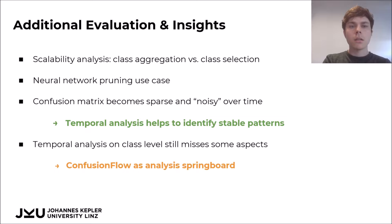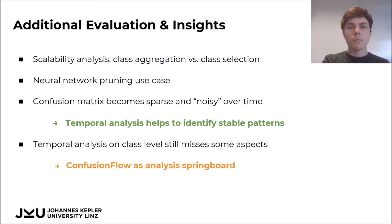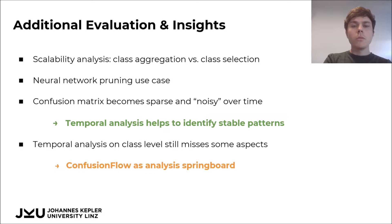In the paper, you can also find a use case that deals with neural network pruning, where the network is allowed to change its architecture over time. From all our evaluation use cases and scenarios, one of the most important insights was that the confusion matrix tends to become sparse and noisy as training progresses, making it very hard to identify true patterns from just an individual snapshot. The temporal analysis tasks enabled by Confusion Flow make it possible to identify true and stable patterns. We also realized that for a true and deep understanding of models, Confusion Flow alone is not enough — it needs to be used in conjunction with other tools, where it can serve as an analysis springboard.